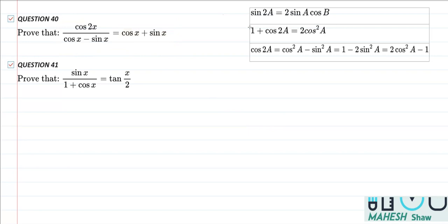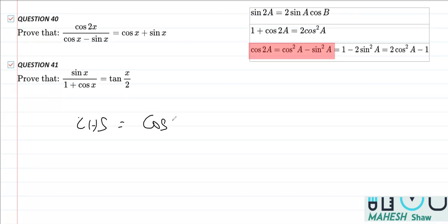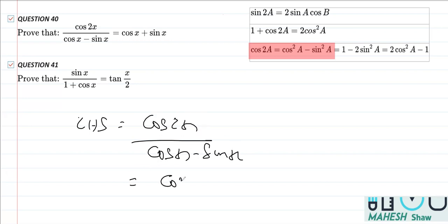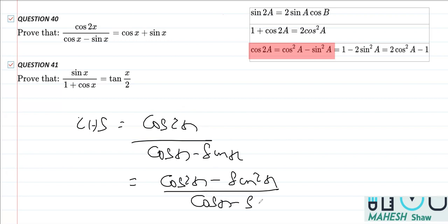For that we are going to use an identity for cos 2x. We know that cos 2x is equal to cos squared x minus sin squared x. Now I'm going to replace the LHS: we have LHS equal to cos 2x over cos x minus sin x. I can replace cos 2x as cos squared x minus sin squared x, divided by cos x minus sin x.